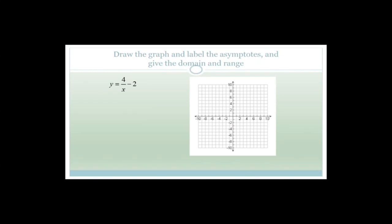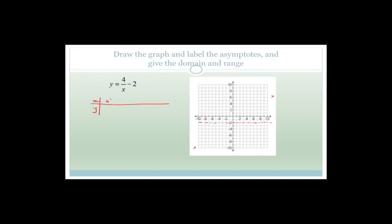So now let us draw the graph and label the asymptotes given the domain and range. Grade 11, this is effectively Grade 10 work. We can see that there is an asymptote here at minus two, so we can draw a dotted line at minus two. Since a is positive, we're expecting it to be in the first and third quadrants. I would draw a table of x and y values, putting in numbers that go into four: four, two, one, zero, minus one, minus two, minus four. Then substitute x into this and find the y values.